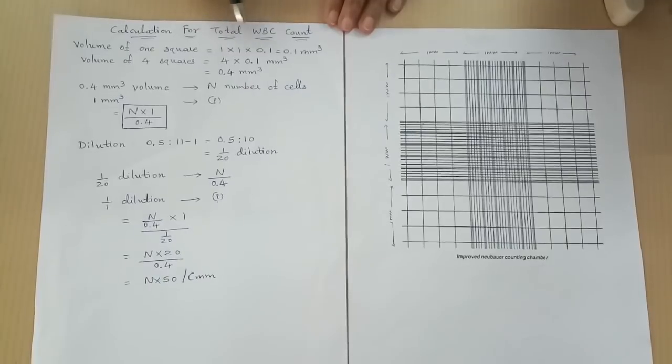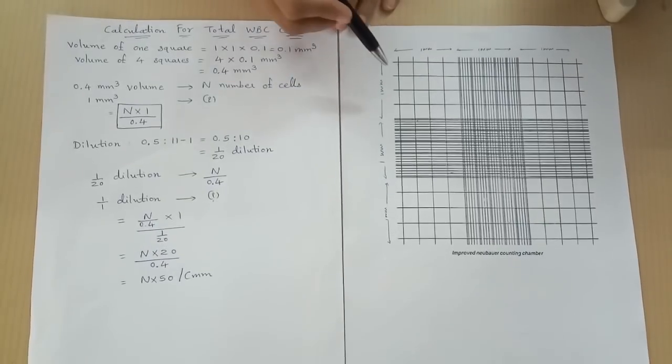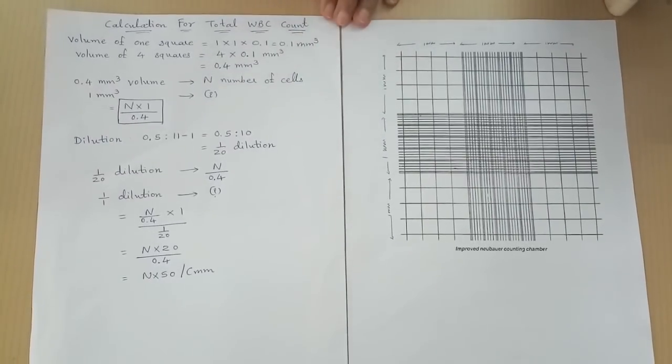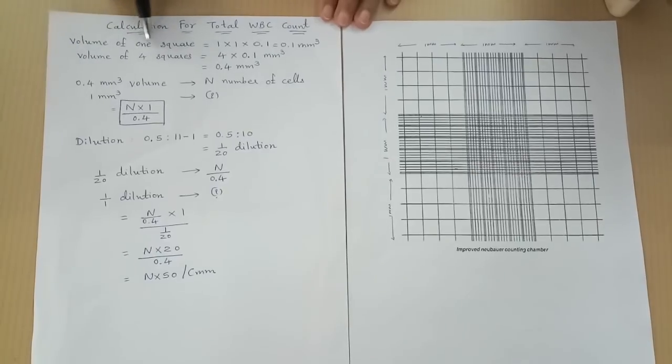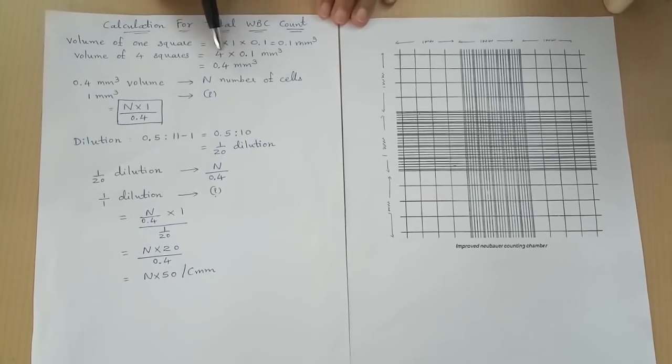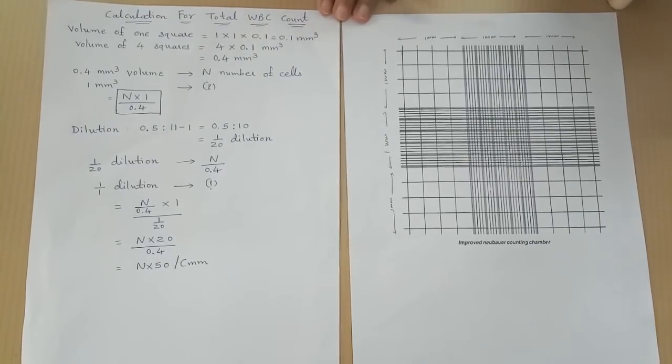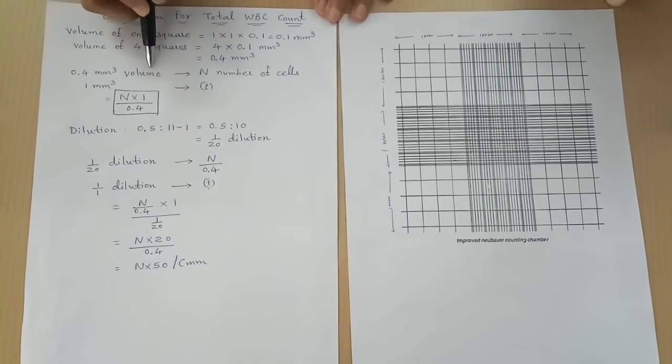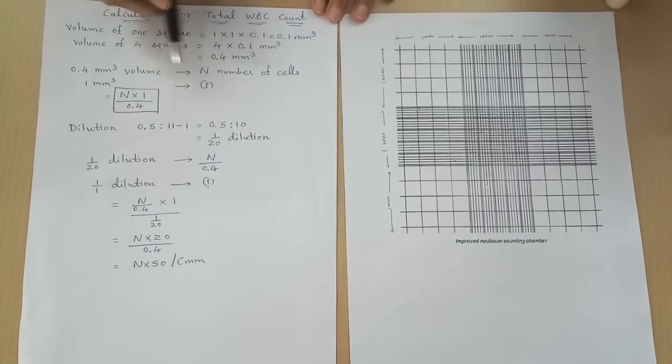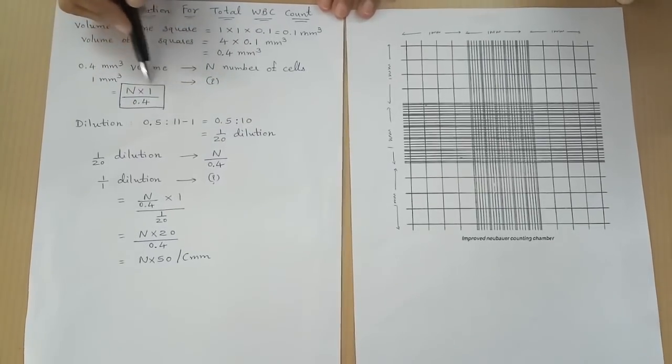Calculation for total WBC count. Volume of 1 square: as we can see, length of 1 square is 1 mm and breadth is 1 mm, depth is 0.1 mm. So the volume of 1 square is 0.1 mm³. Therefore volume of 4 squares becomes 0.4 mm³. In 0.4 mm³ volume, we counted the cells, number of cells is N. In 1 mm³, number would be N multiplied by 1 divided by 0.4.